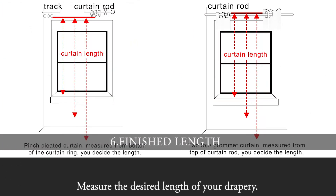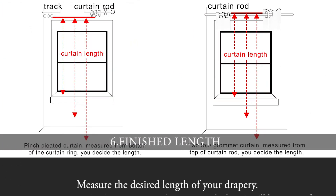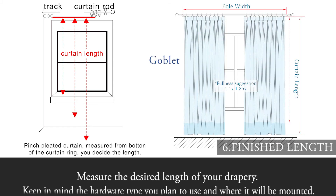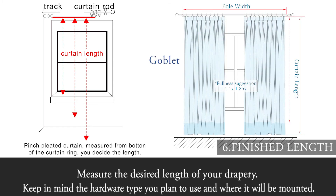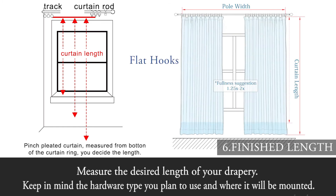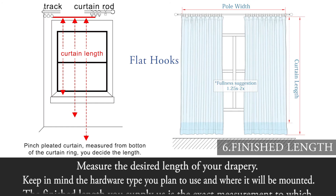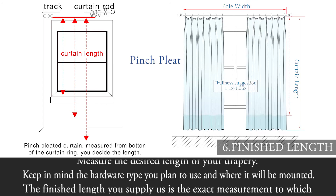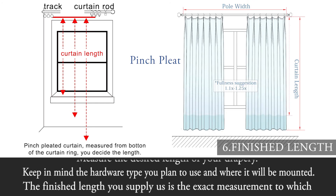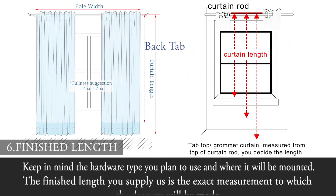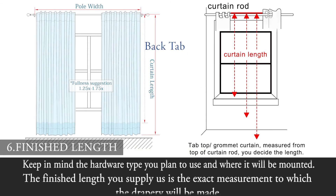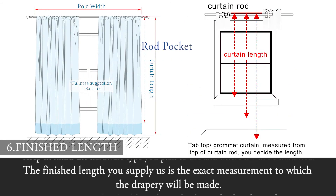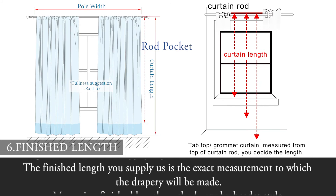6. Finished length. Measure the desired length of your drapery, keeping in mind the hardware type you plan to use and where it will be mounted. The finished length you supply is the exact measurement to which the drapery will be made. Measuring finished length method varies by header style.